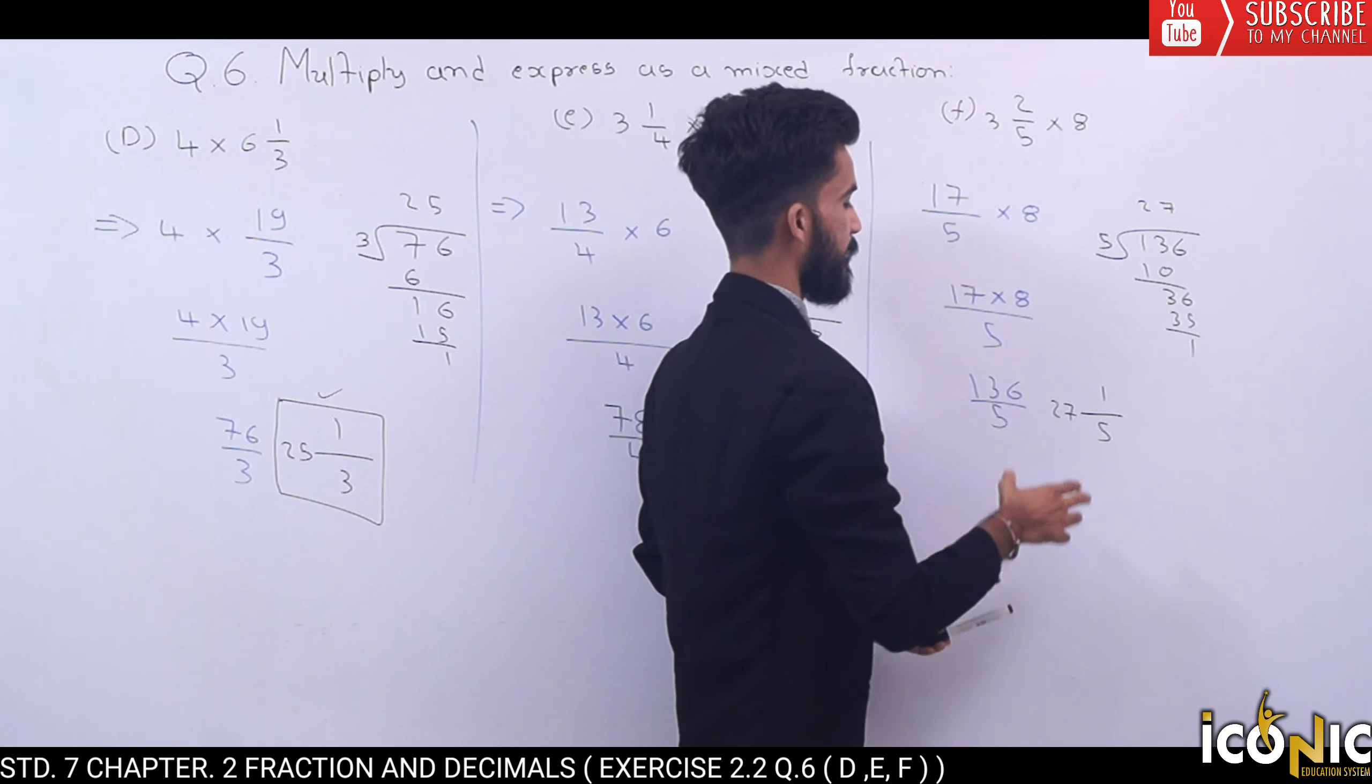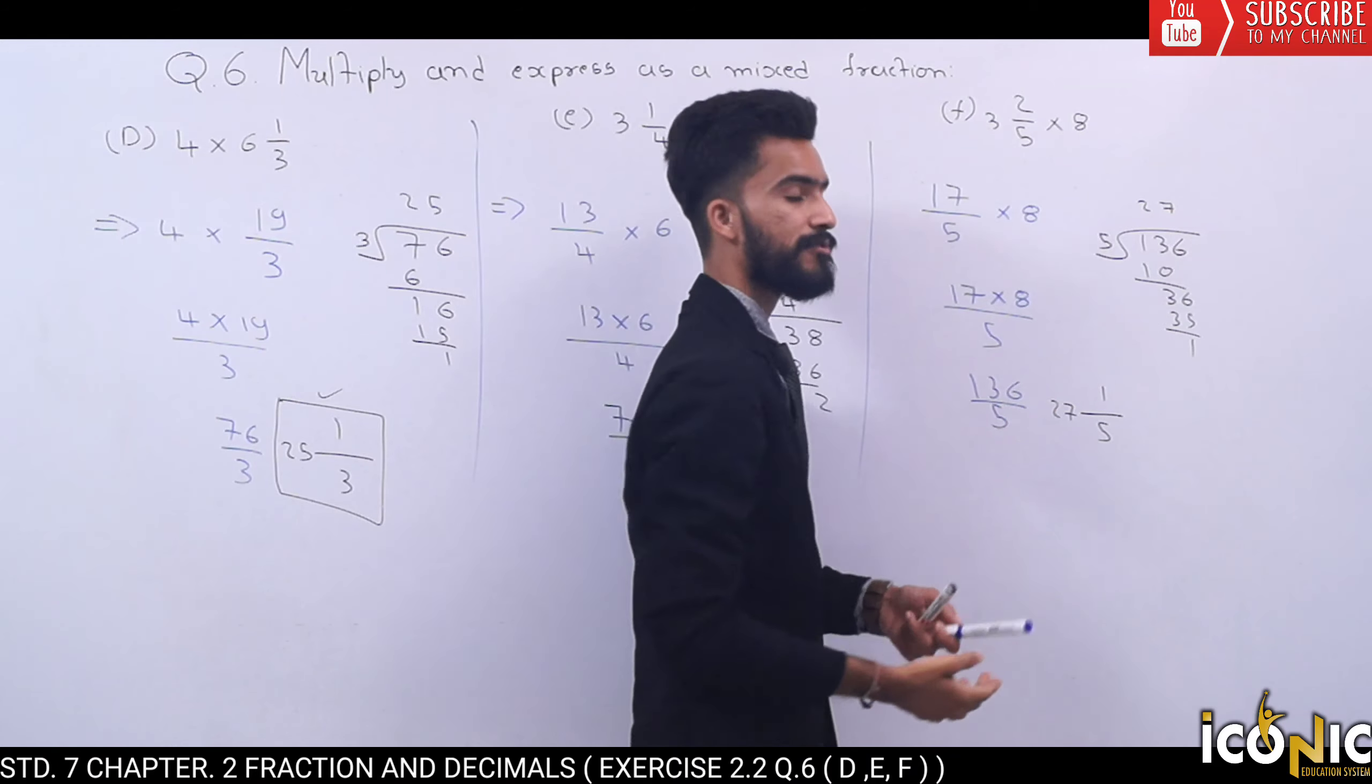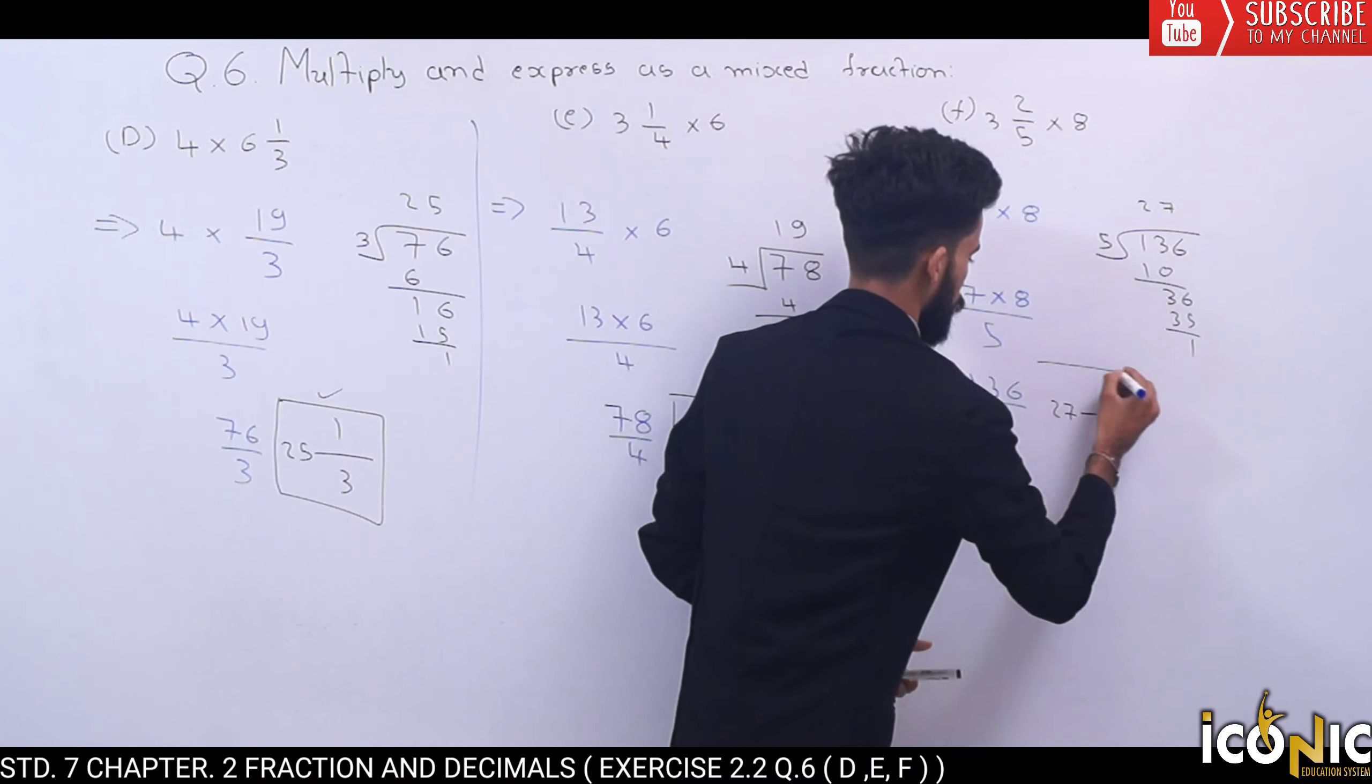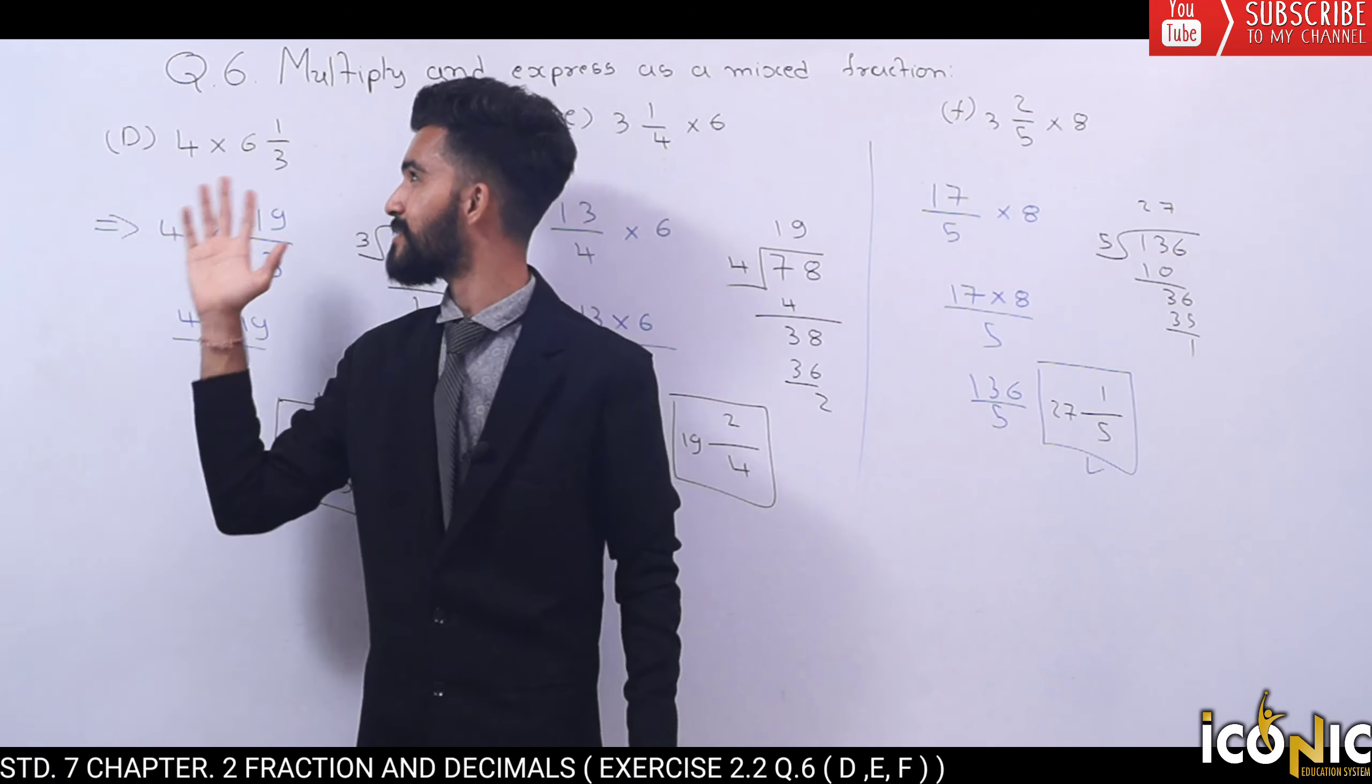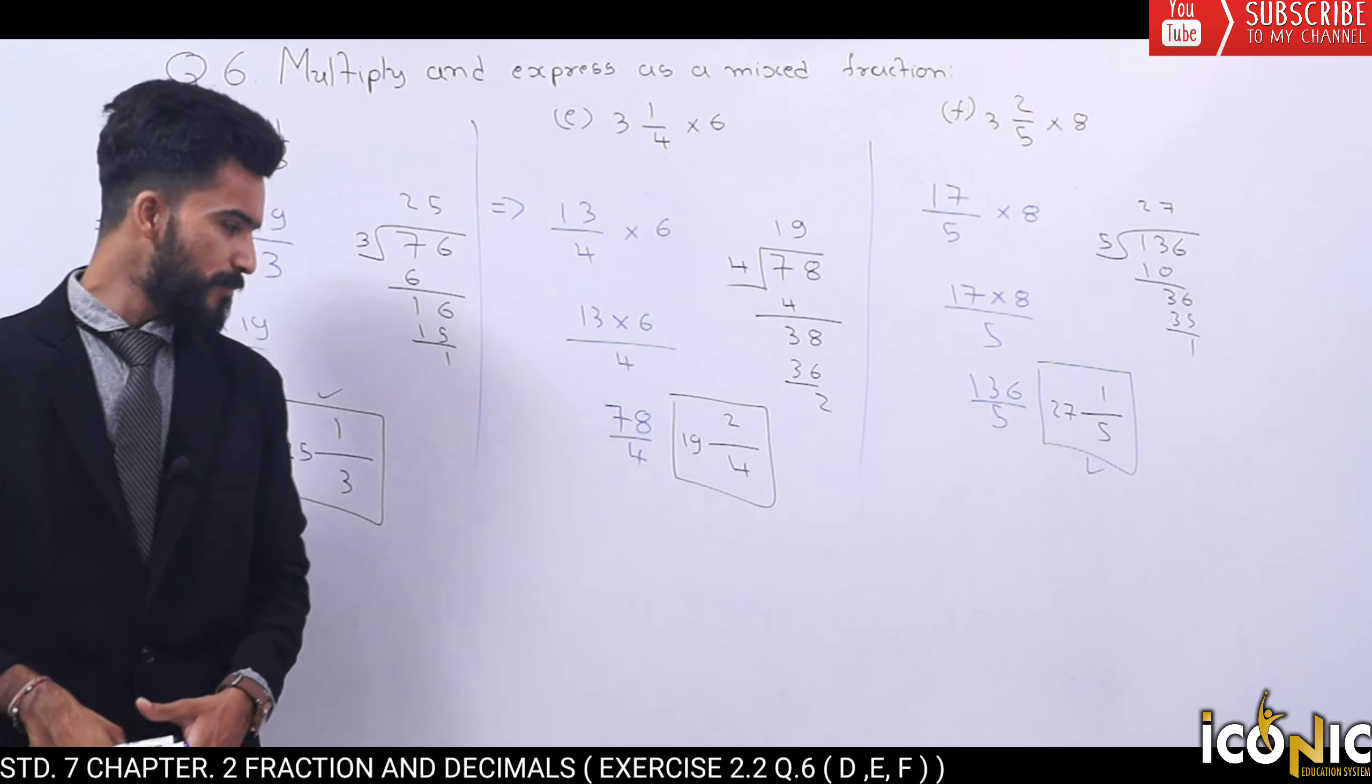So the answer is 27⅕. 5 times 27 is 135 plus 1 is 136. So this will be our final answer. This is the solution of question number 6. Now we will go to our next example.